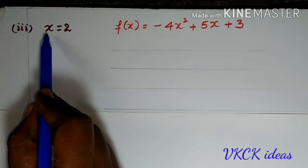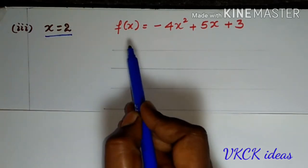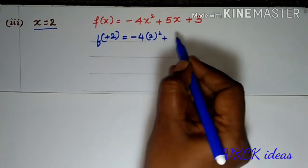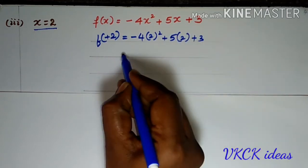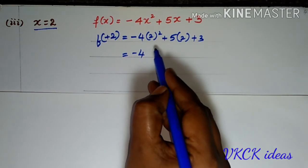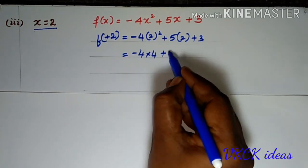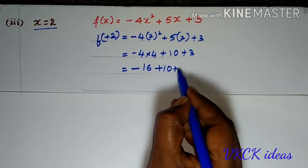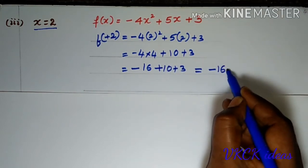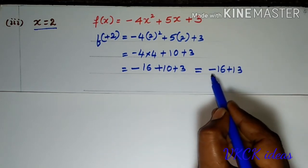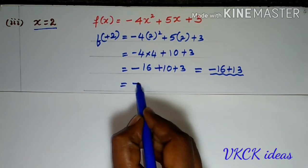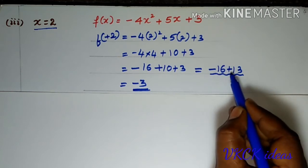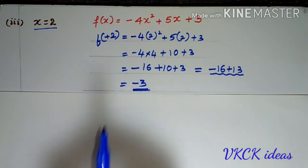The third part says to find the value when x = 2. So, f(2) = -4(2²) + 5(2) + 3. Minus 4 as it is; 2² = 4, so -4 × 4 = -16; 5 × 2 = 10; plus 3. This gives -16 + 10 + 3 = -16 + 13 = -3. If you are getting confused with signs, just think of the number line, and you will get the answer -3.